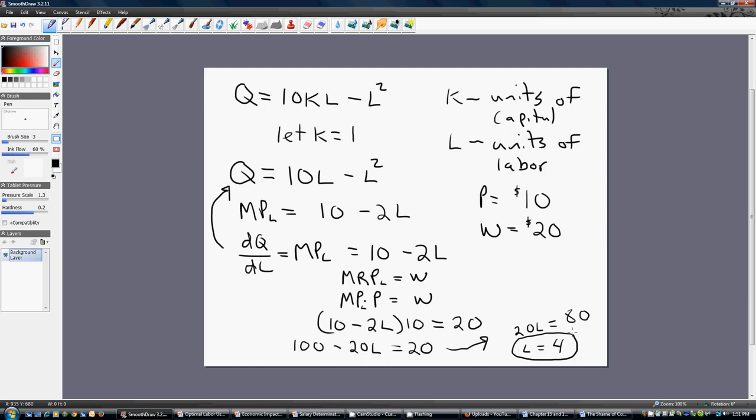If the firm hires four workers, four units of labor, it will be maximizing profit. We also may want to check how many units of output this firm will be producing with four units of labor. So, let me go ahead and do that.